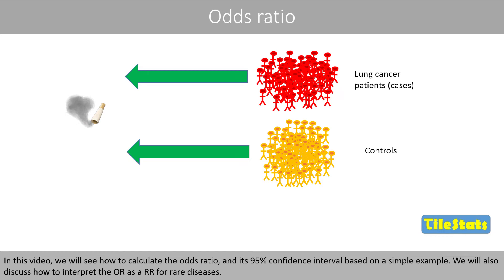In this video, we'll see how to calculate the odds ratio and its 95% confidence interval based on a simple example. We will also discuss how to interpret the odds ratio as a relative risk for rare diseases.